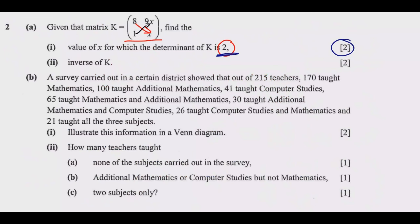Now let us move to question B. A survey carried out in a certain district showed that out of 215 teachers: 170 taught mathematics, 100 taught additional mathematics, 41 taught computer studies, 65 taught mathematics and additional mathematics, 30 taught additional mathematics and computer studies, 26 taught computer studies and mathematics, and 26 taught all three subjects.